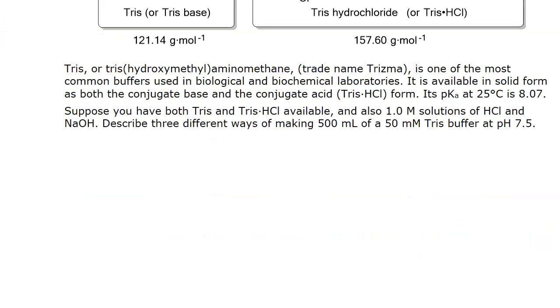You can use the Tris base and Tris acid forms in the appropriate ratio, or you could use the Tris base form and convert some of that into the acid form by using your one molar HCl, or you could use the Tris HCl form, convert that into some of the conjugate base form using your one molar solution of sodium hydroxide. Those are the three ways. For all three of those ways, you will need to know the total amount of buffer in the system. So let's start with that.